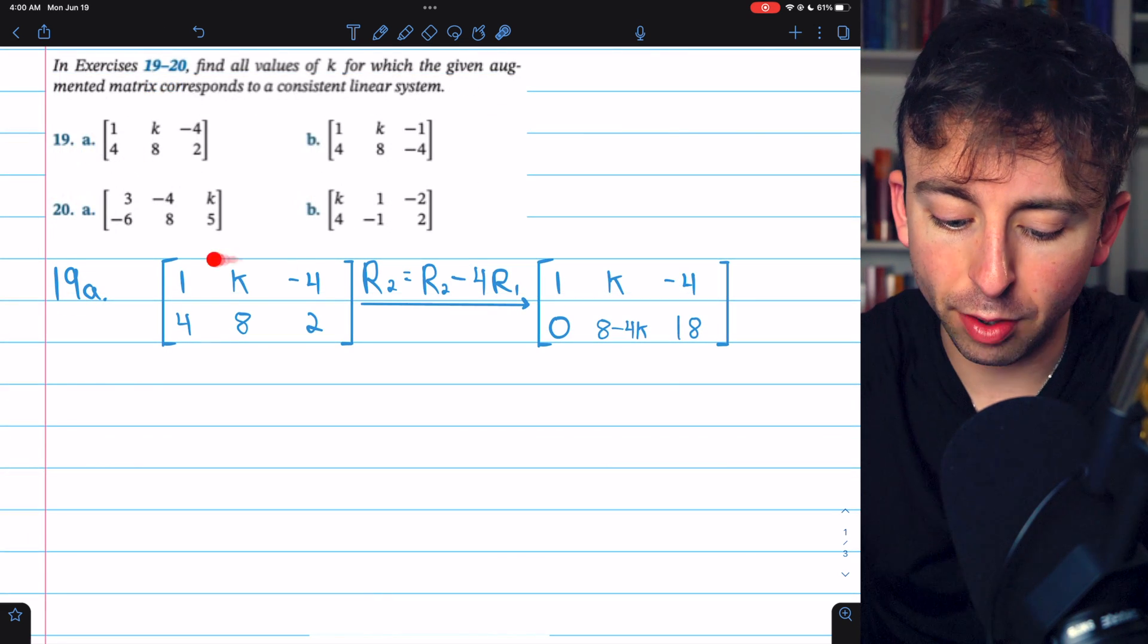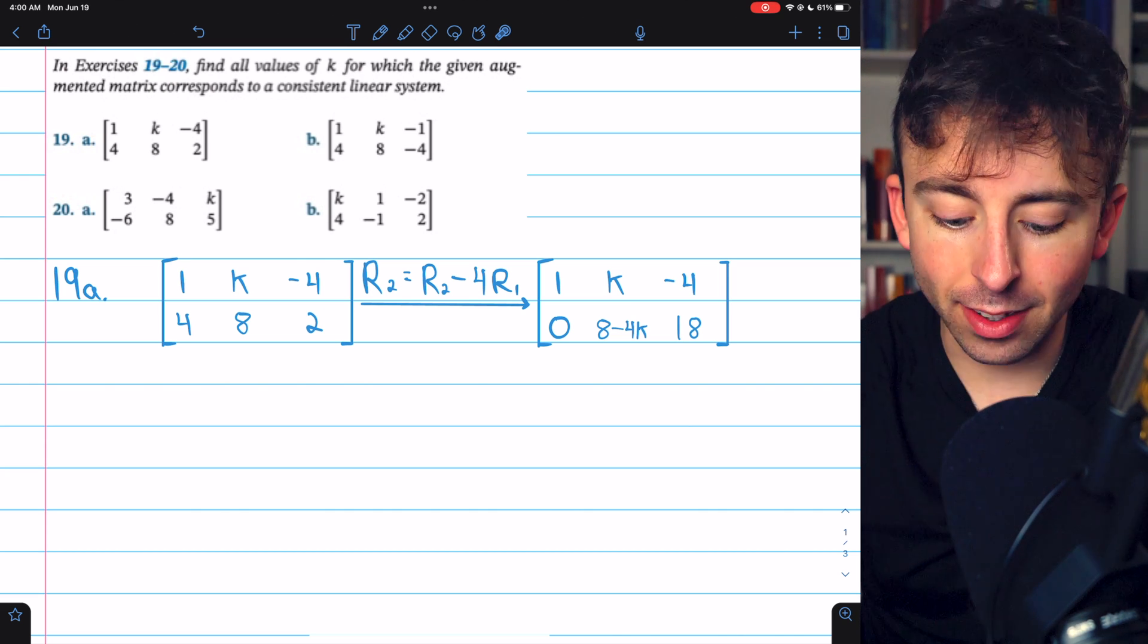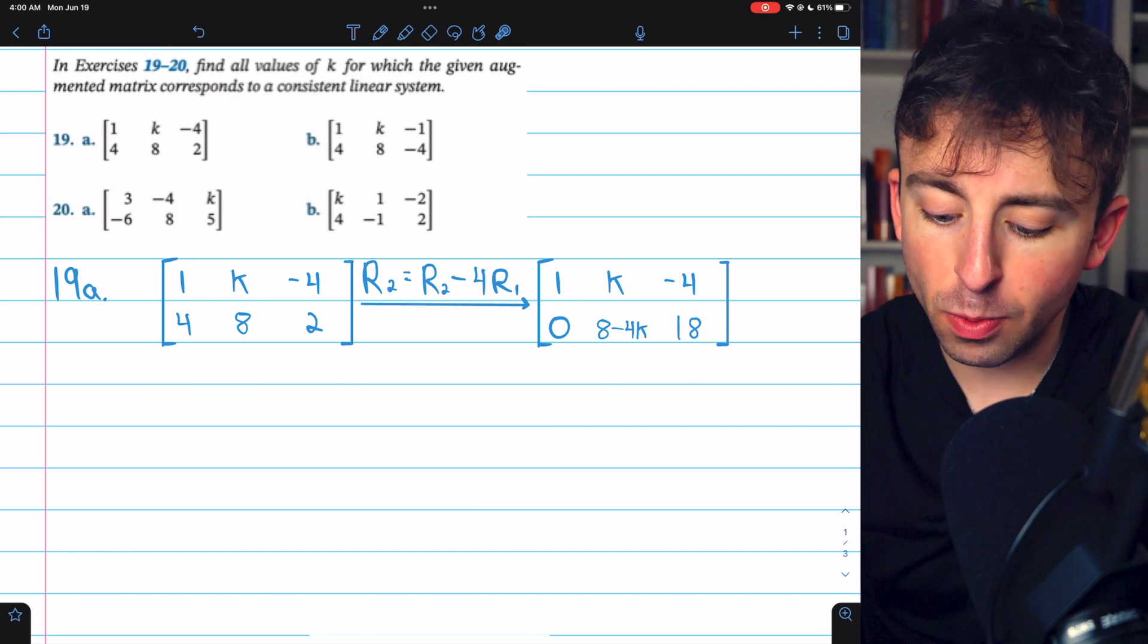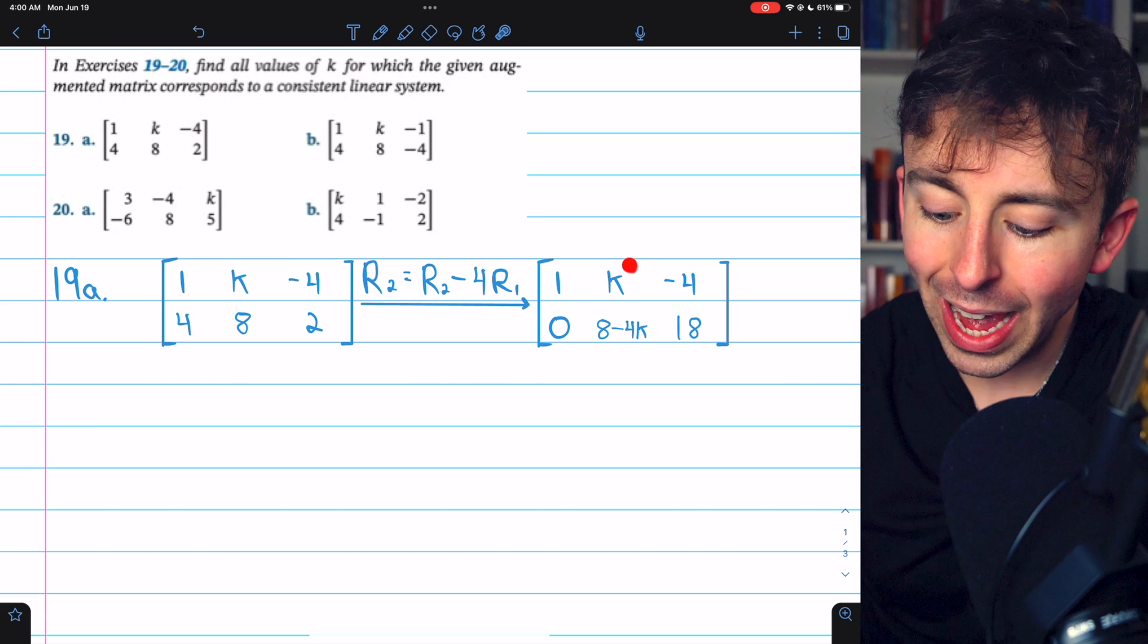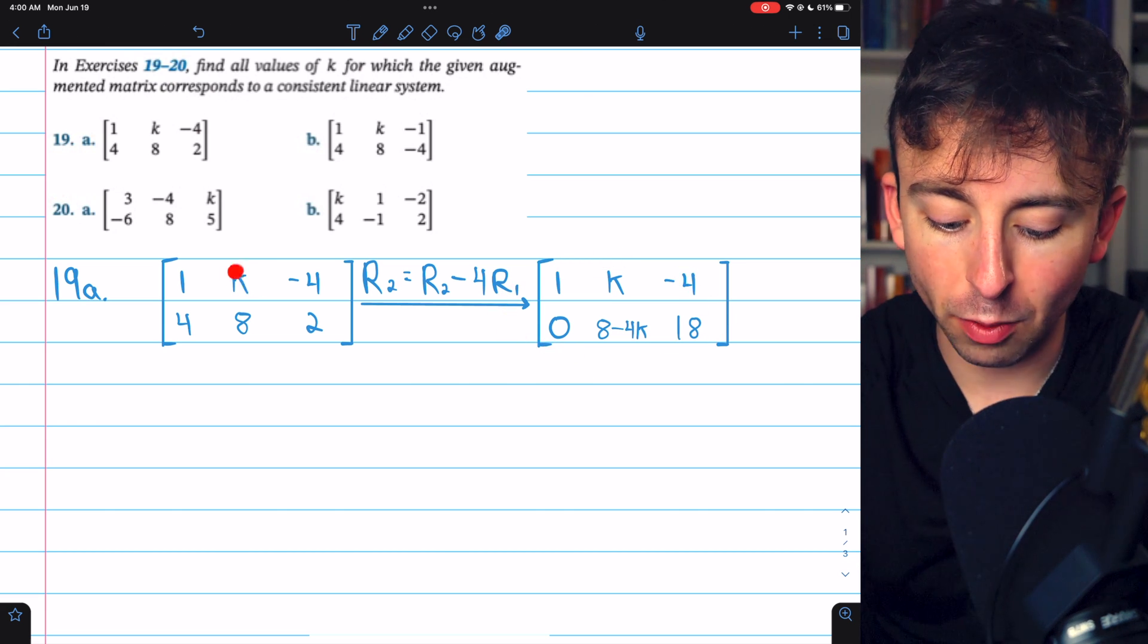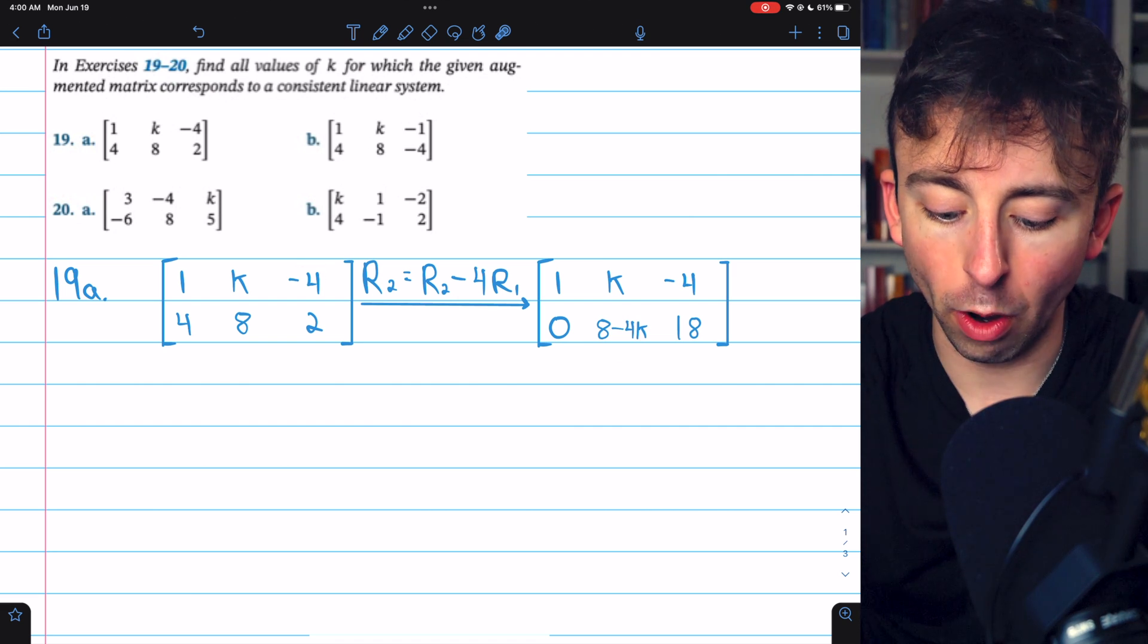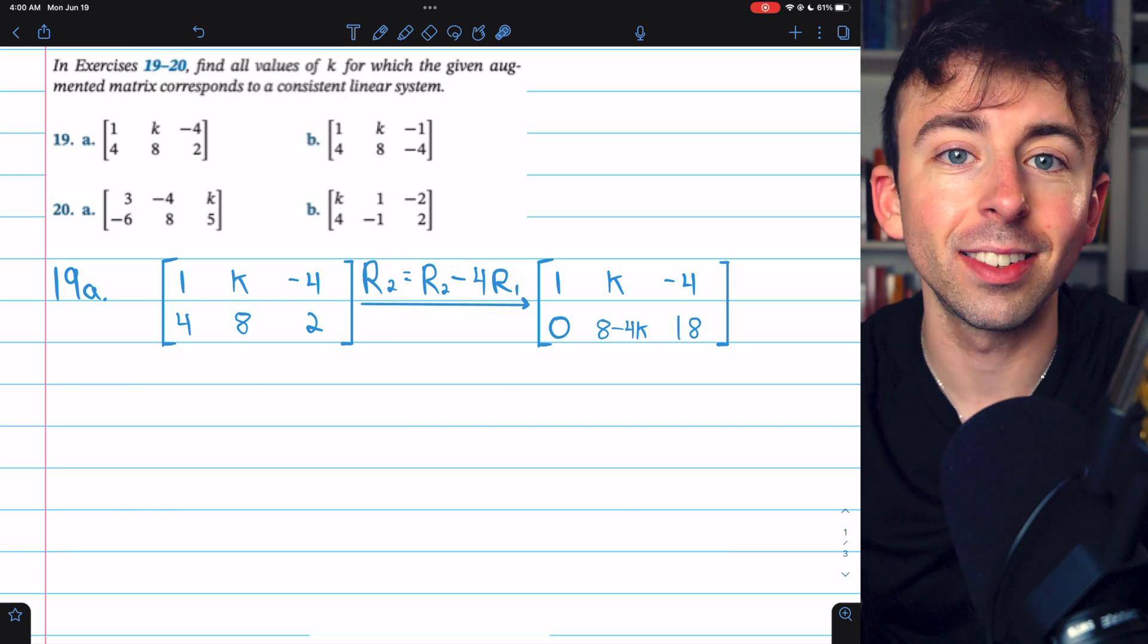Here is 19a. I've just rewritten the matrix here. The first thing we might do is get rid of this entry of 4. We want to have a 0 below that leading 1, so let's subtract 4 copies of row 1 from row 2. That gets us to this matrix here. Notice we have to subtract 4k from 8, so we have 8 minus 4k, and of course we're also subtracting 4 times negative 4 from 2, so that's actually 2 plus 16, giving us 18.